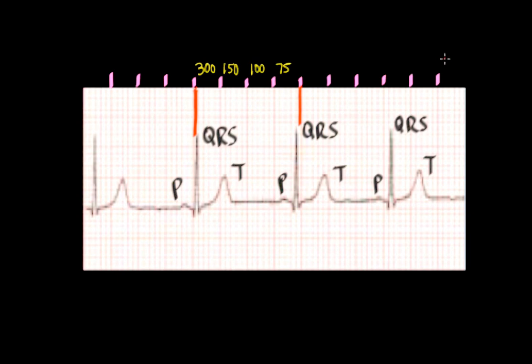Just another comment about determining heart rate: if the heart rate is irregular, this method is not going to be terribly accurate because the intervals between the QRS complexes are going to be varying, and depending on which one you happen to look at, it could not be representative of the average heart rate. So if you want to figure out the average heart rate in that case, you can count the number of cardiac cycles every six seconds and just multiply that by 10. Sometimes the ECG paper actually has grid lines marking every three seconds, so this is sometimes not that difficult to do.